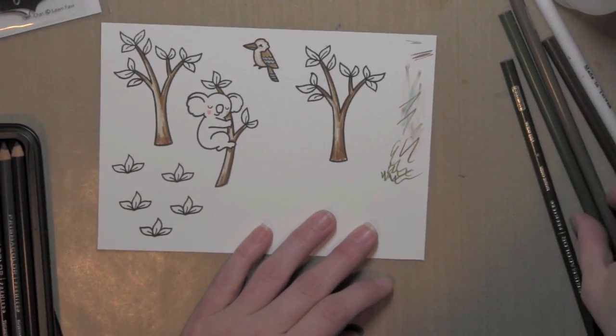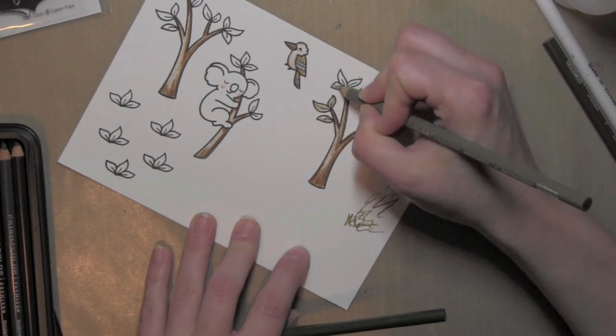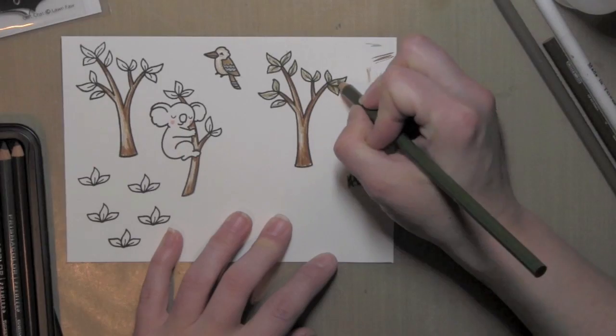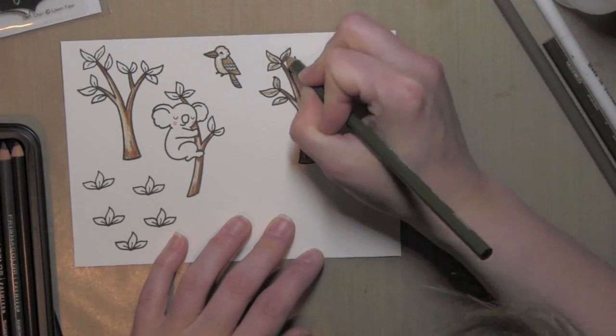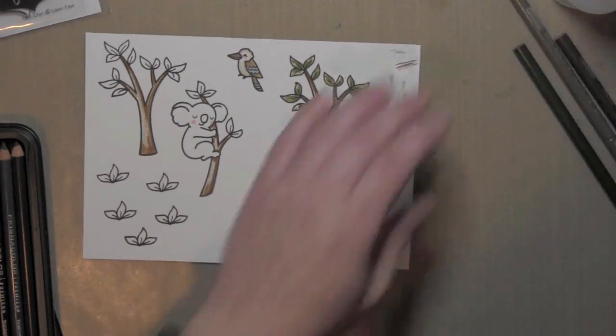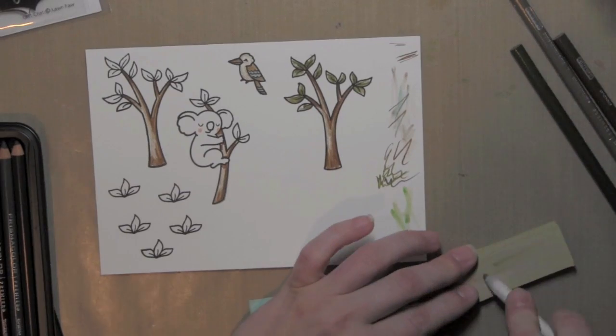Just like the tree trunks, for the greenery of the trees and also those little trio of leaves, I'm using a couple of shades of green, kind of a lighter color at the top part of the leaf and then darker color near the base, and then I will blend all of these out.